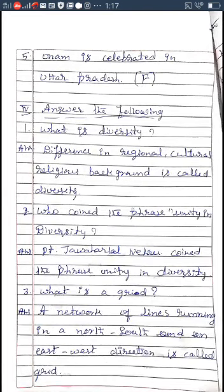Now answer the following questions. Question one: What is diversity? Difference in regional, cultural, and religious background is called diversity. Question two: Who coined the phrase 'unity in diversity'? Pandit Jawaharlal Nehru coined the phrase 'unity in diversity.' Question three: What is a grid? A network of lines running in north-south and east-west direction is called a grid.